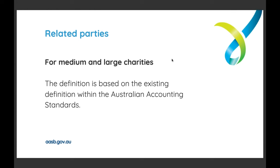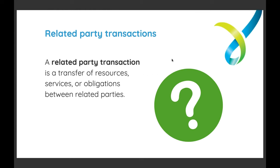Generally, a related party could be someone with direct involvement with the charity, such as a responsible person — a board or committee member — or senior management such as the CEO. The close family members of these people can also be a related party. A related party could also refer to another organisation that has significant influence over the charity's decision-making. Simply being involved with a charity doesn't make someone a related party — we need to consider whether the person has significant influence over the charity's strategic and financial decisions.